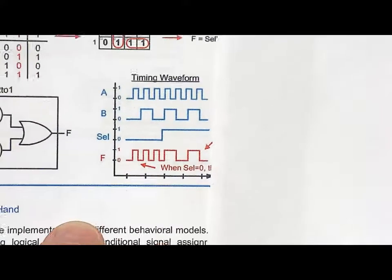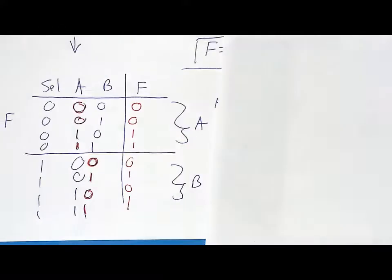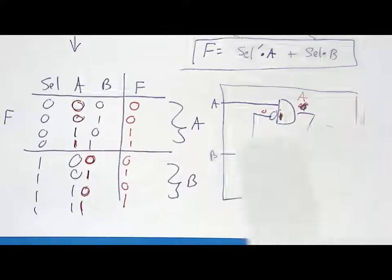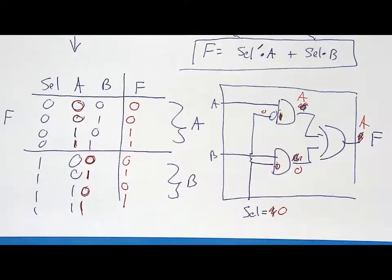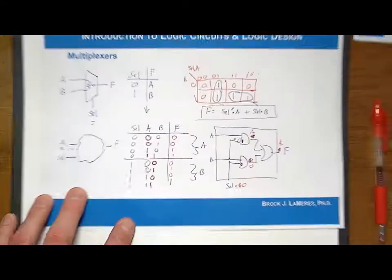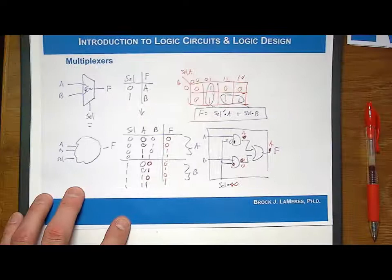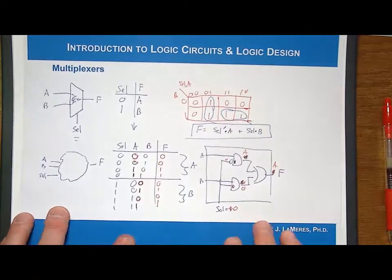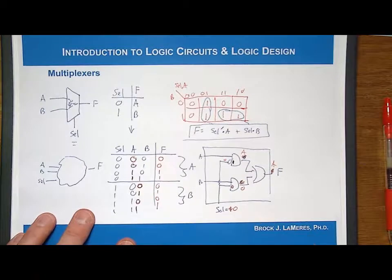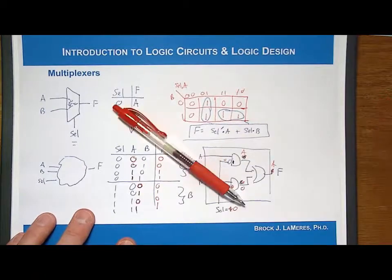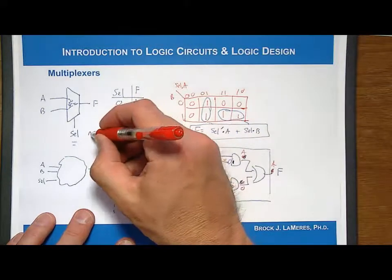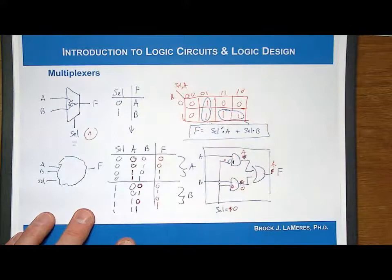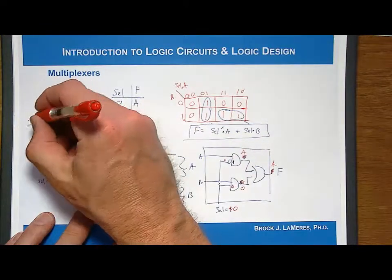So that's a 2-to-1 multiplexer. We can expand this to larger sizes. What dictates the size is the number of select lines. With N select lines, you can support 2-to-the-N inputs.